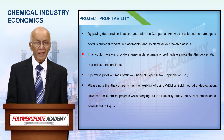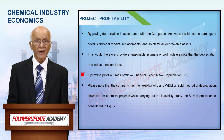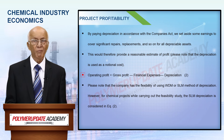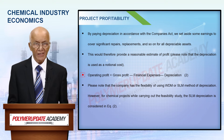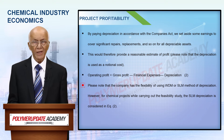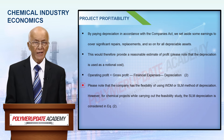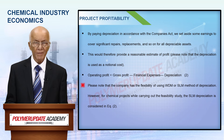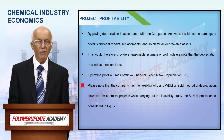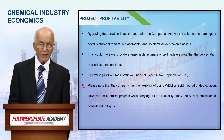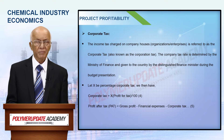Please note that depreciation is used as a notional cost. Operating profit = gross profit minus financial expenses minus depreciation. The company has flexibility of using the written down value method or straight line method of depreciation. However, for chemical projects while carrying out the feasibility study, the straight line method of depreciation is considered.